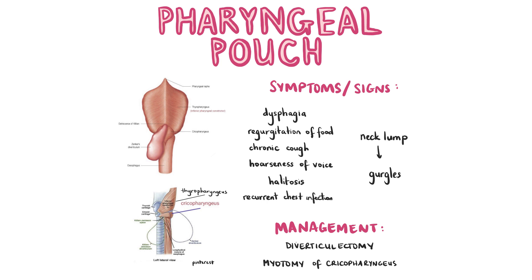Let's start with pharyngeal pouches. Killian's dehiscence is a triangular-shaped area of weakness in the muscular wall of the pharynx. It is located between the transverse bundle of the inferior pharyngeal constrictor, also known as thyropharyngeus, and the oblique bundle of the inferior pharyngeal constrictor, also known as cricopharyngeus. When there is poor coordination of the peristalsis of the inferior pharyngeal constrictor muscles, the intraluminal pressure increases and an outpouching can develop in this muscle-deficient area, known as a pharyngeal pouch or Zenker's diverticulum.